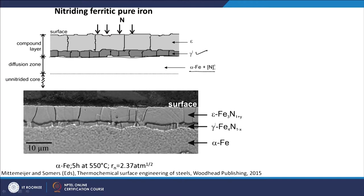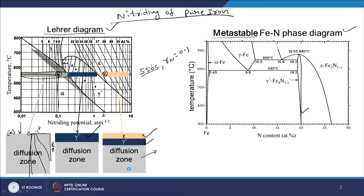This sample was nitrided for 5 hours at 550°C using a nitriding potential of 2.37. Looking at the Lehrer diagram, 2.37 places us in the region forming epsilon, gamma prime, and alpha — which is exactly what we see in the microstructure, confirming the schematic.